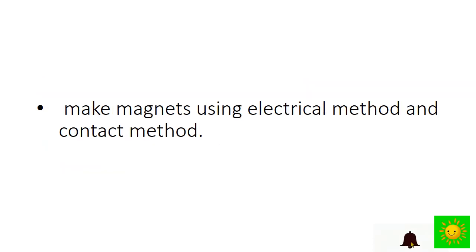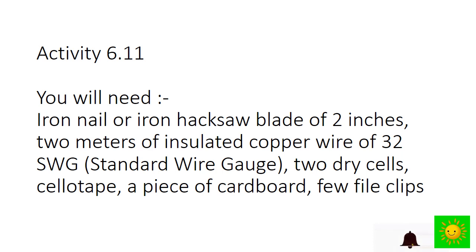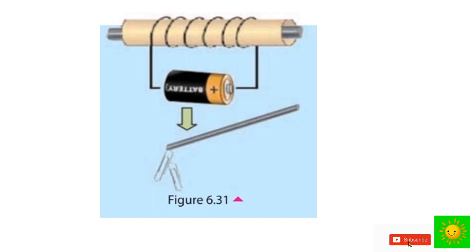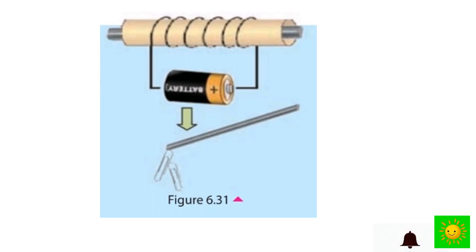Let's make magnets using the electrical method. Make a five-centimeter long tube using a piece of cardboard. Wind copper wire around that tube to make a coil. Bring the iron nail close to the paper clips and check whether it has magnetic power. Then insert the iron nail into the cardboard tube, strip both ends of the coil, connect it to the dry cell, and supply the current several times. The electric current should be supplied several times for a long time until permanent magnetism is observed.